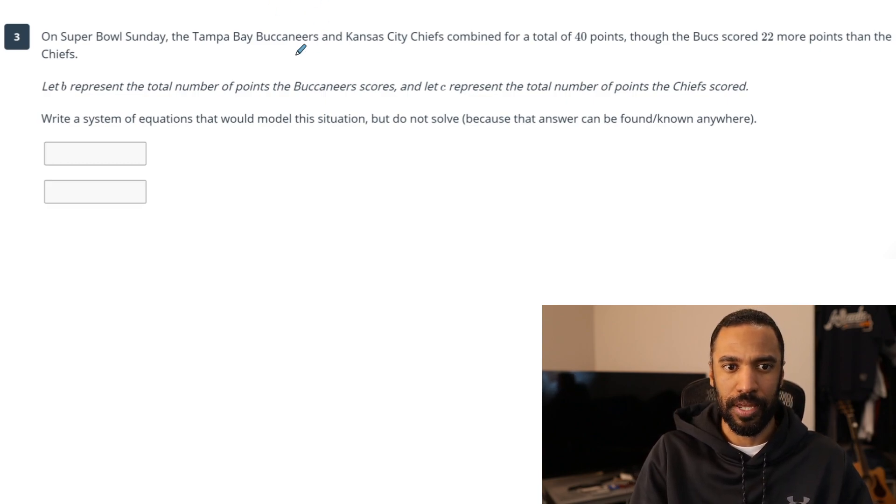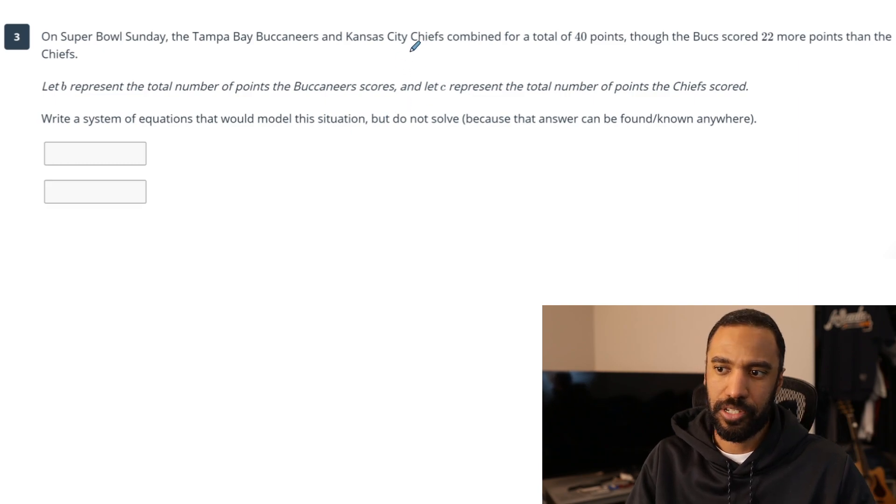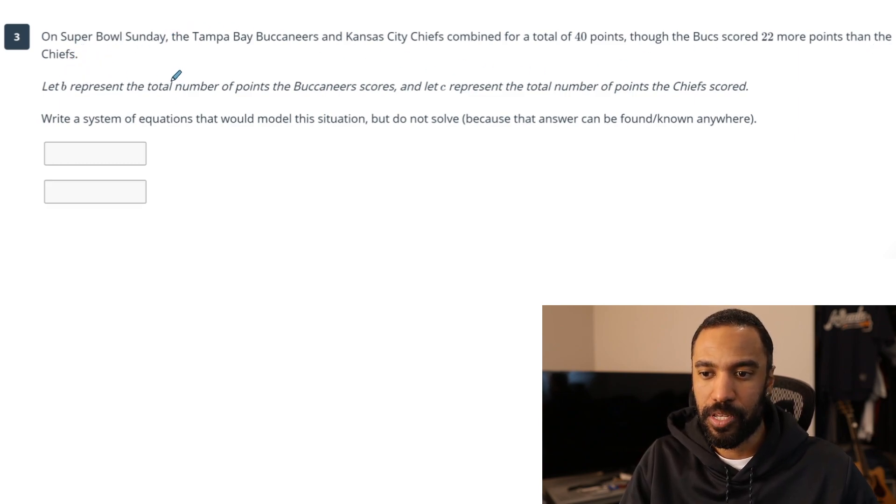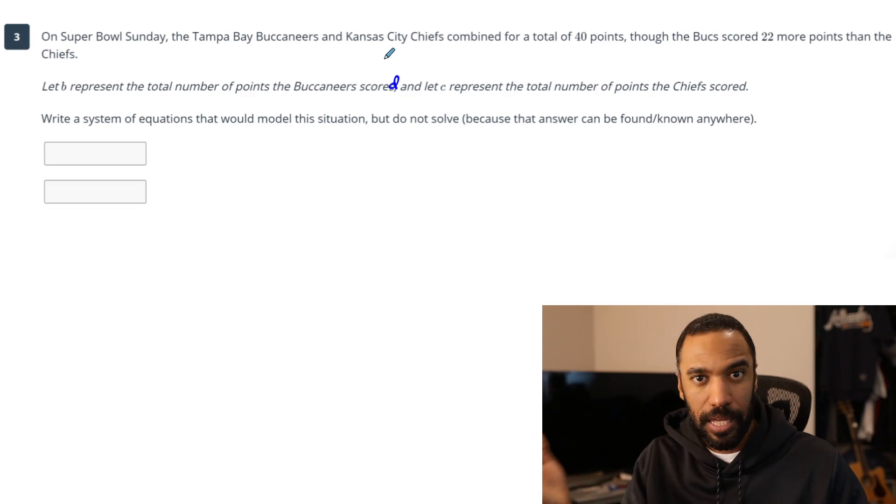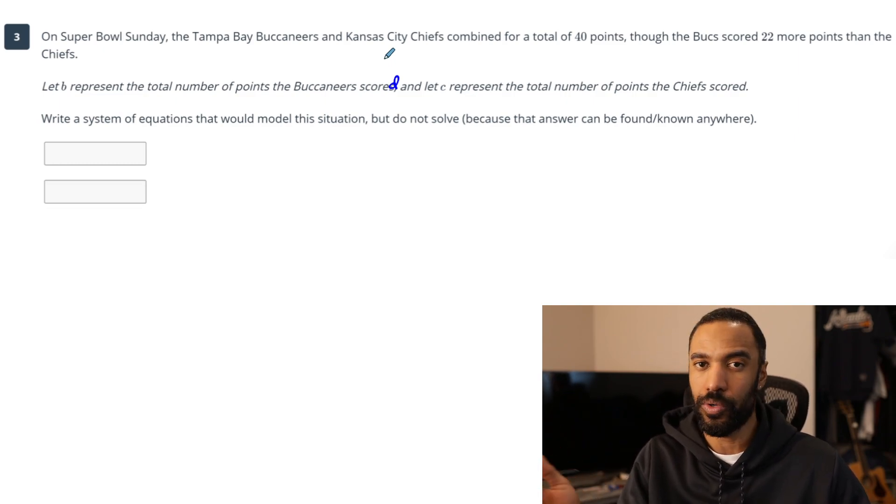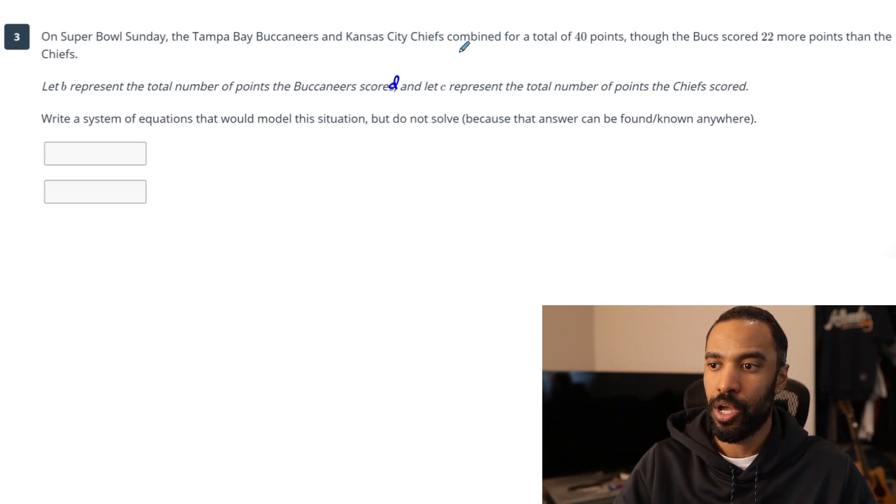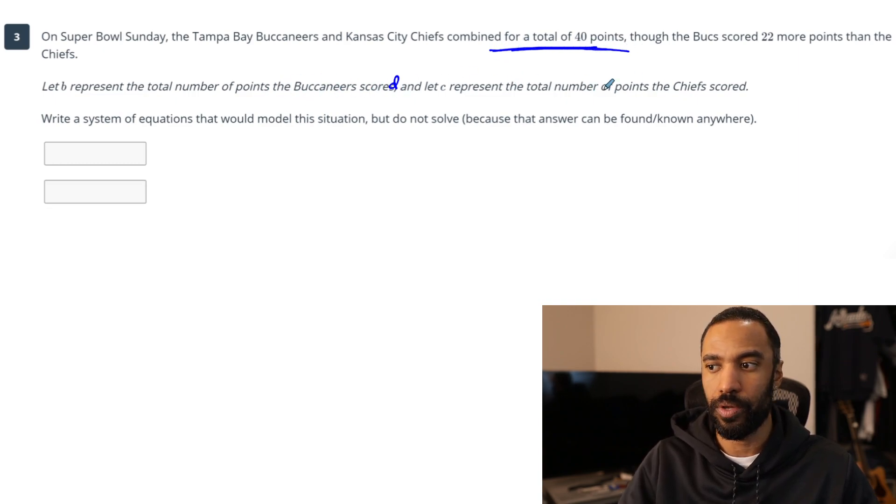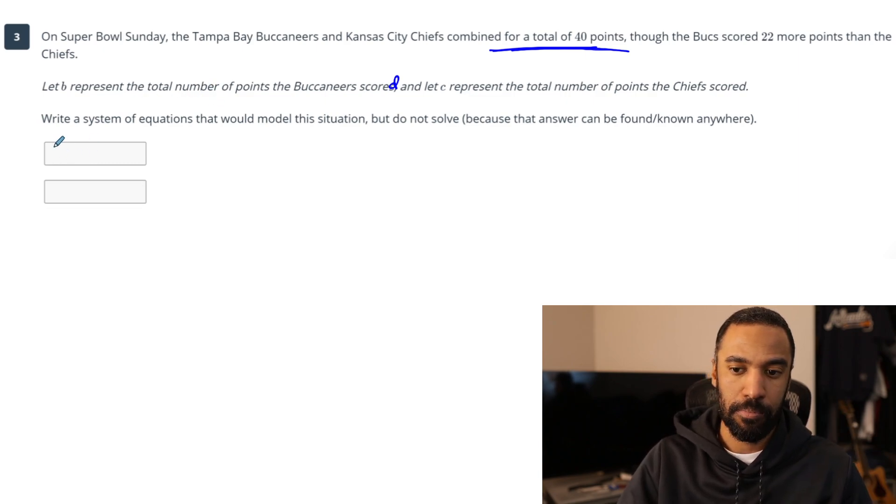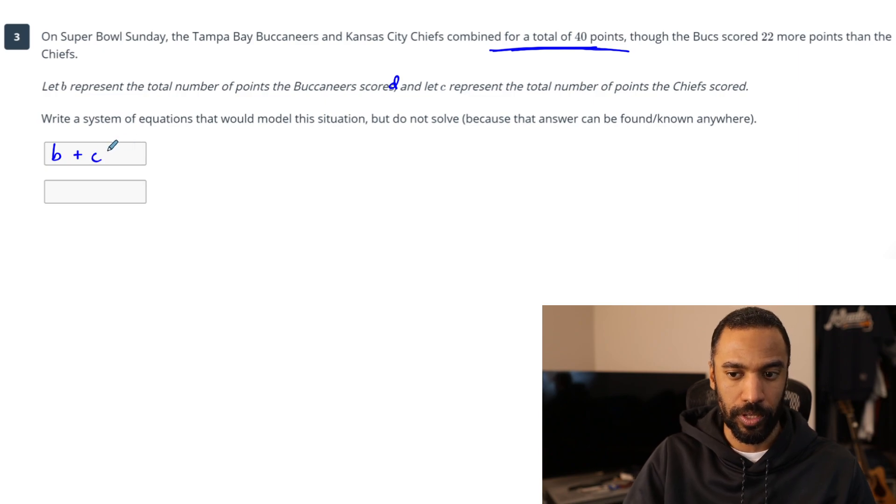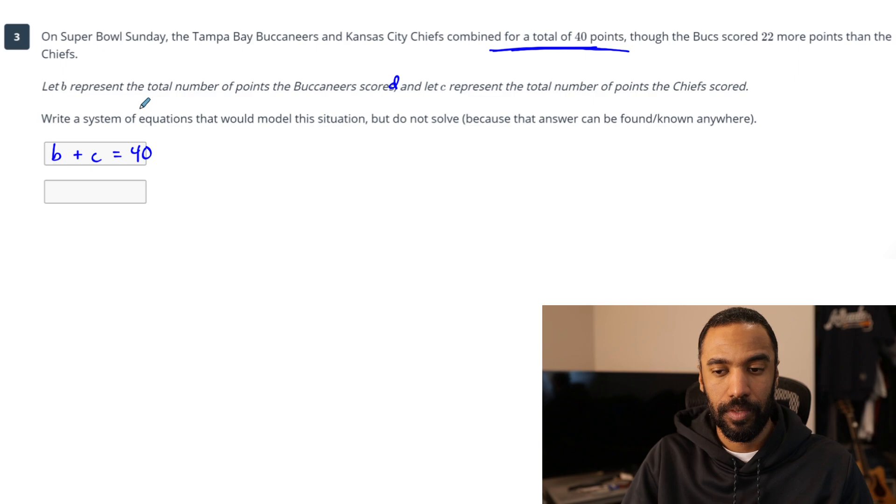Number three says on Super Bowl Sunday, the Tampa Bay Buccaneers and Kansas City Chiefs combined for a total of 40 points. The Bucs scored 22 more points than the Chiefs. Let B represent the total number of points the Buccaneers scored and C represent the total number of points the Chiefs scored. Write a system of equations that would model the situation. A combined total is a sum, an addition. B plus C equals 40.